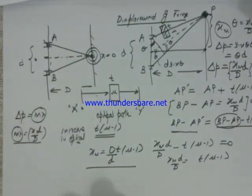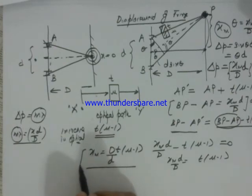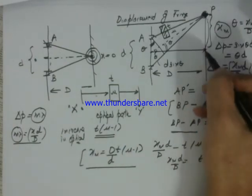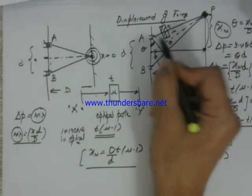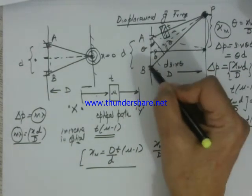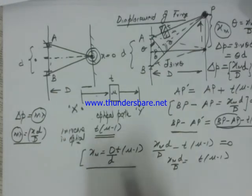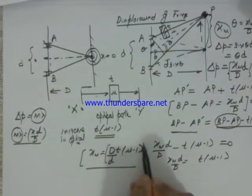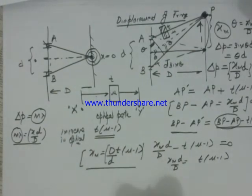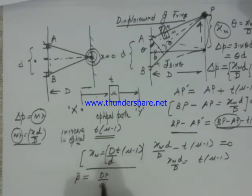So the shift which has happened, this is the distance x. The fringe which was supposed to be here without slab has now reached at this point P, and this shift is Dt upon d mu minus 1.